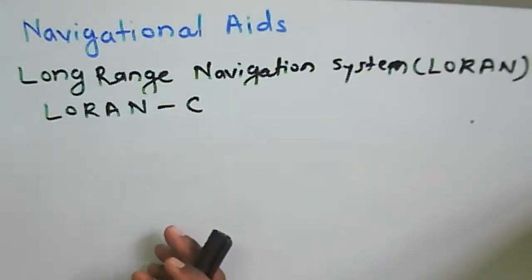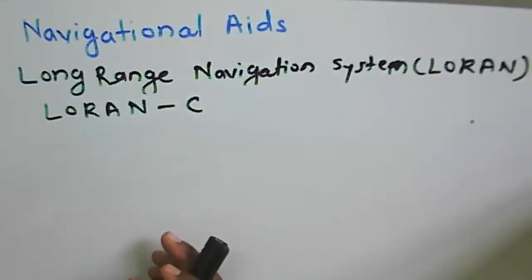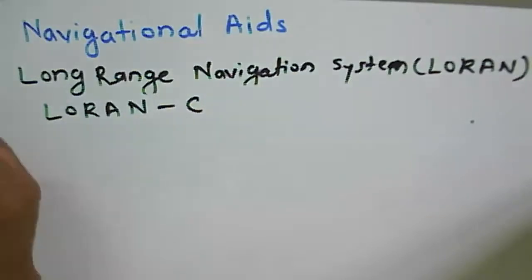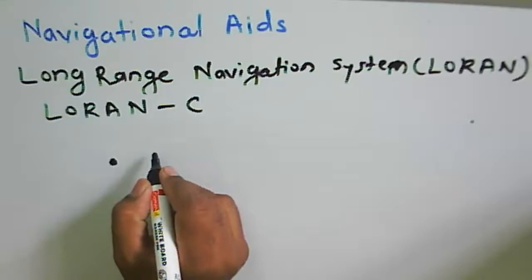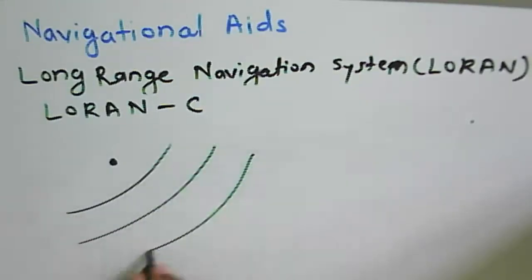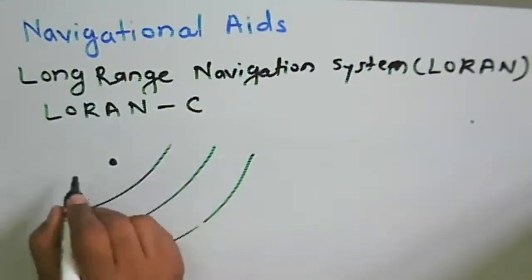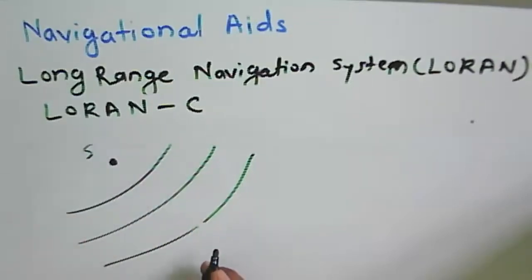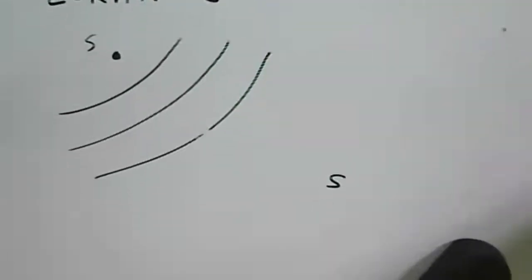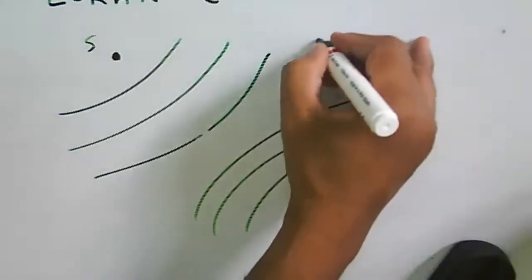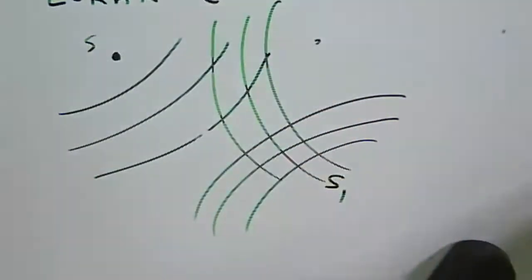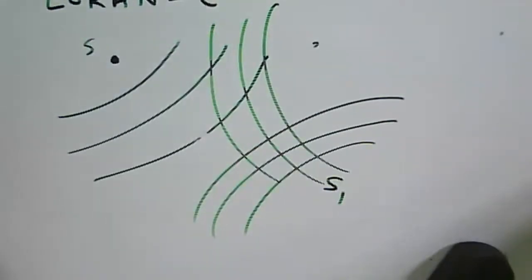The LORAN hyperbolic line of position is illustrated as follows: consider station S1 — these are the hyperbolic lines of position from this station. Similarly, another station S2 generates hyperbolic lines of position. From the intersection of lines of difference, the position is found. There must be a minimum of two stations — one master and one secondary. With multiple stations in a chain, positions are identified more accurately.